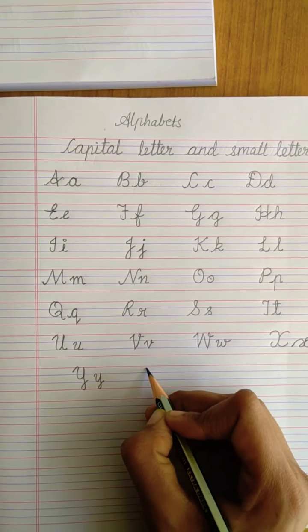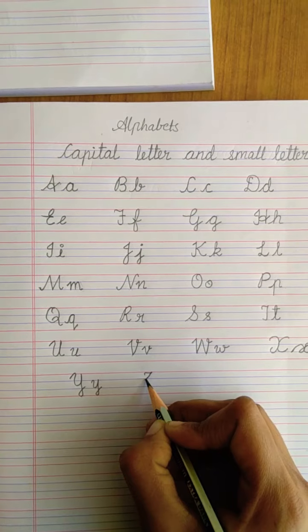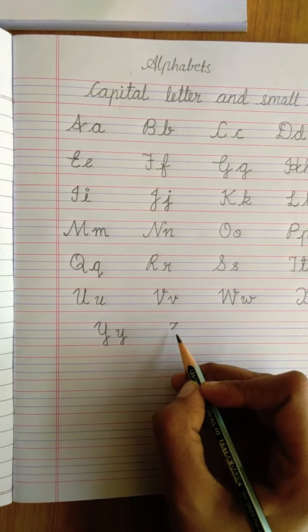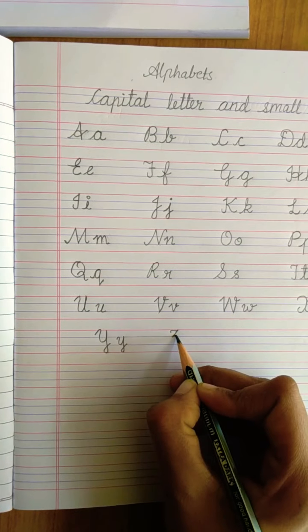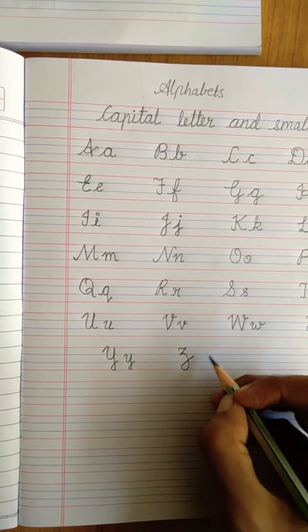Next you have Z. Just make it like F. Come, give a cross line. Then from here, make a C like this. Opposite curve. Make a round and then Z.